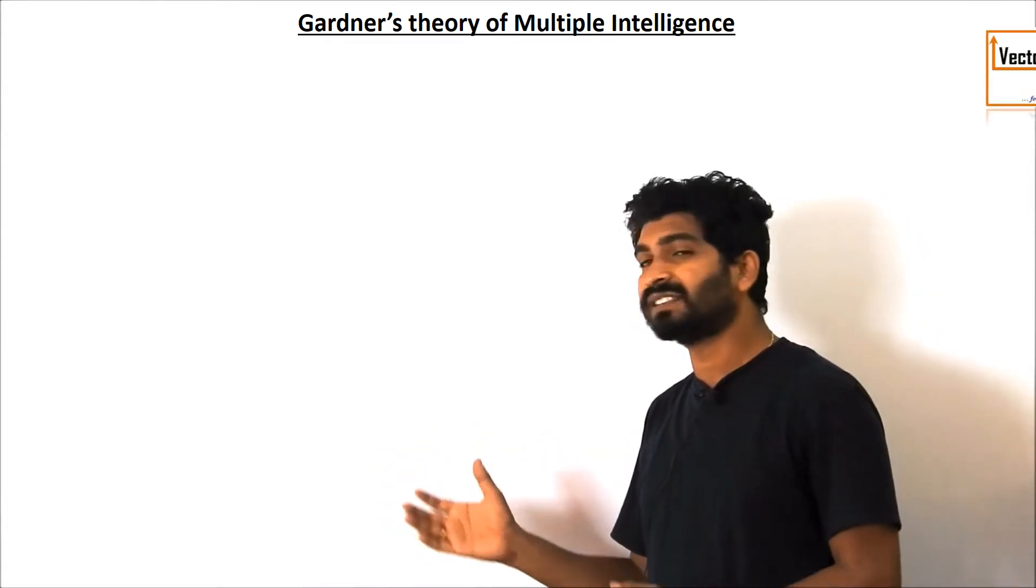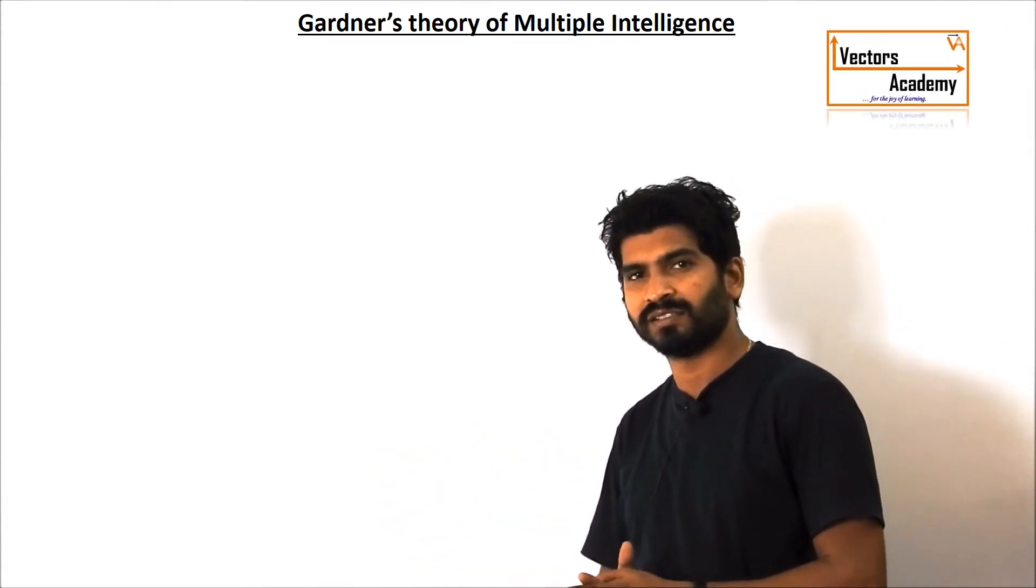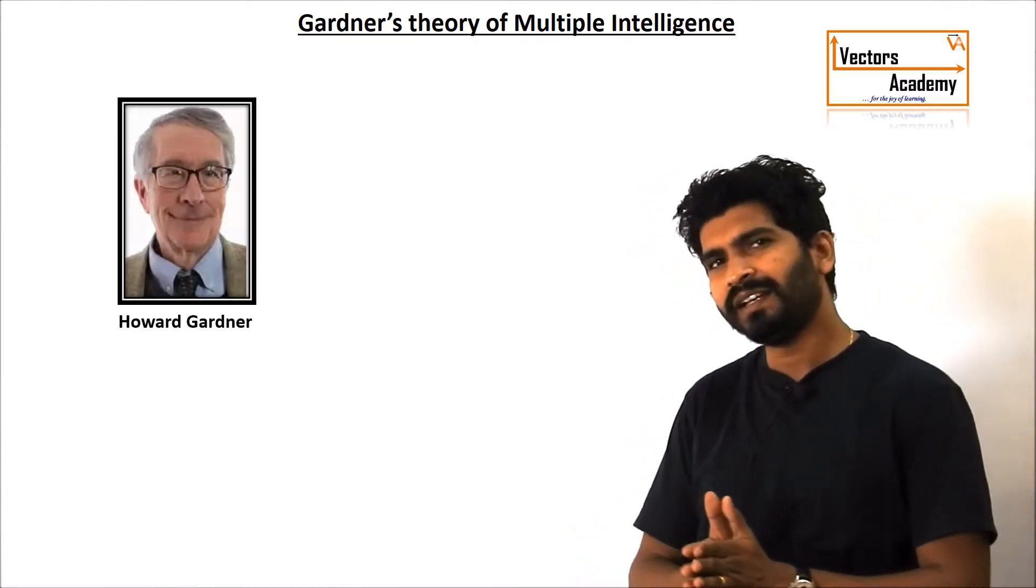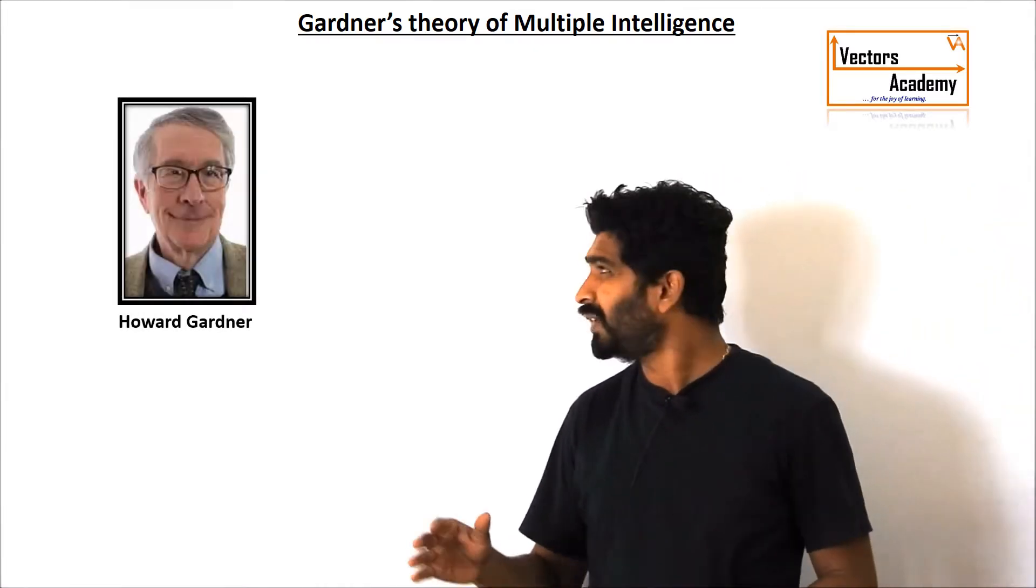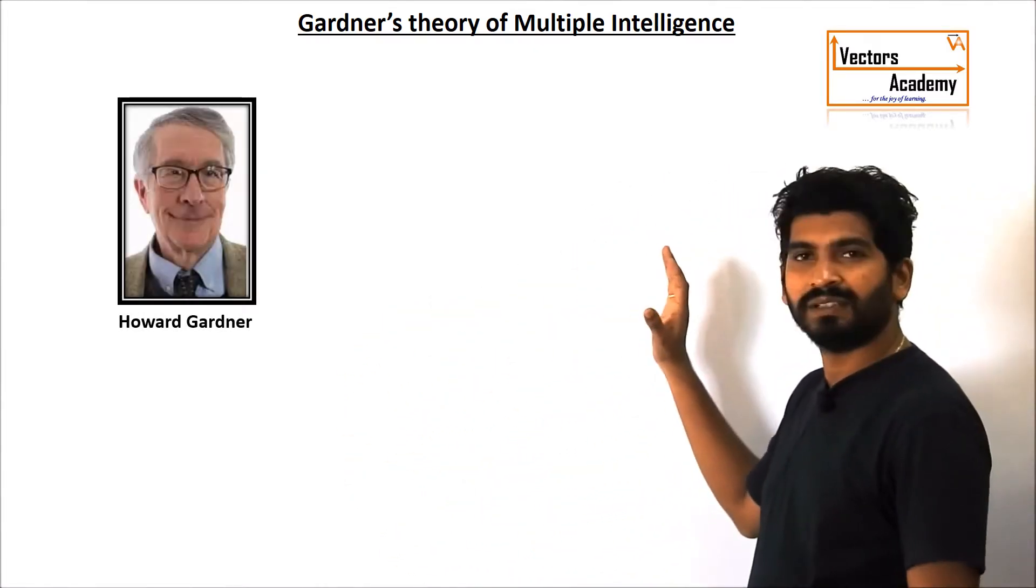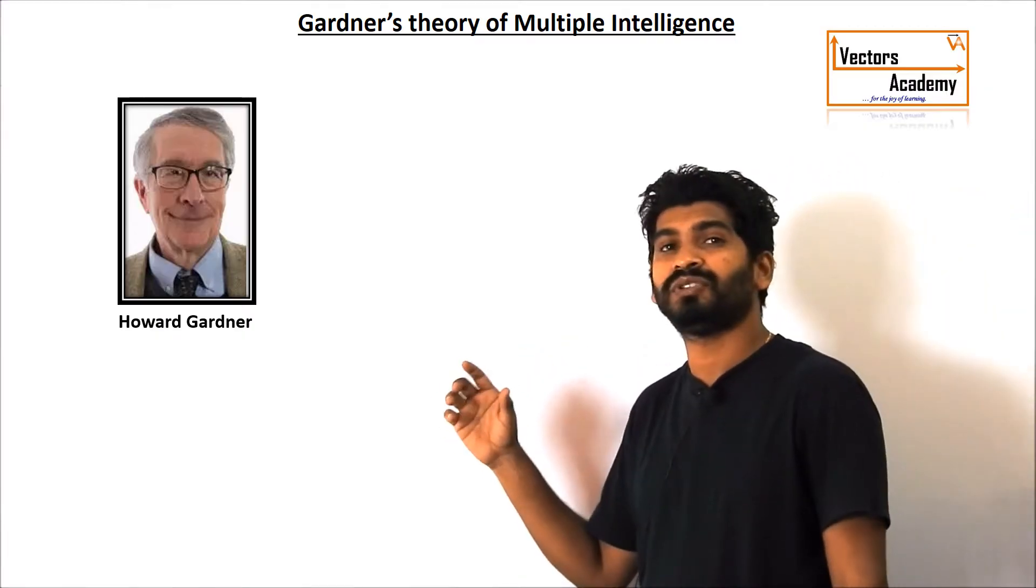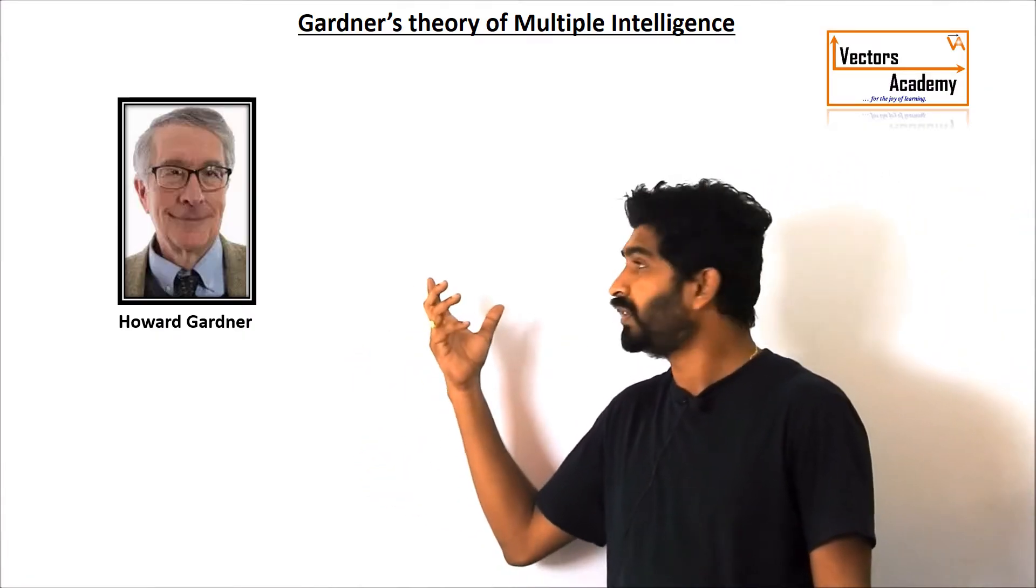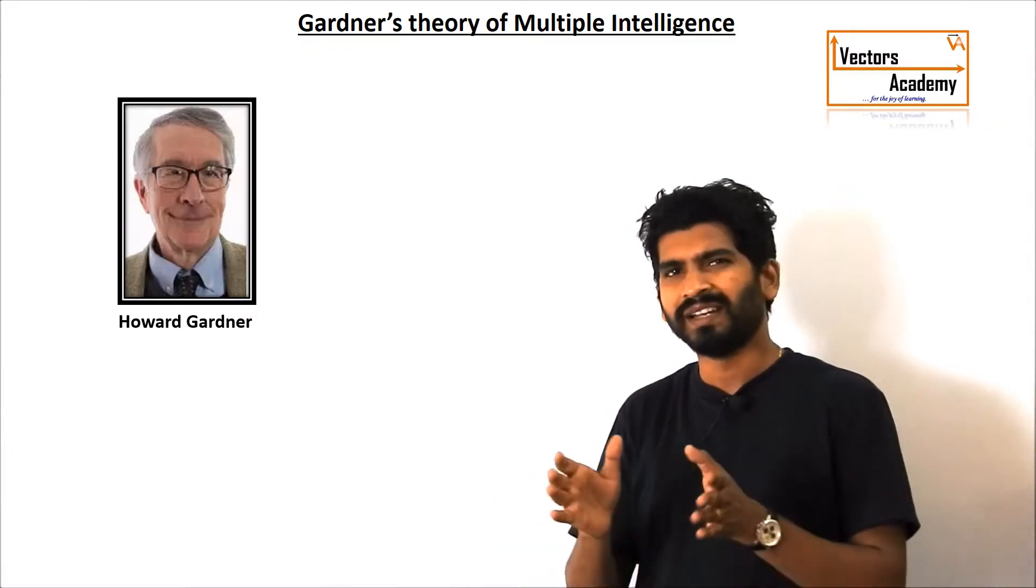So let us today have a look at what is Gardner's theory of multiple intelligences. Now in 1983 Gardner claimed that the previous theories which were discovered to define intelligence were quite narrow.